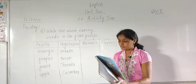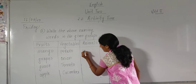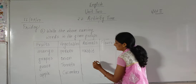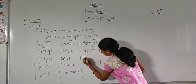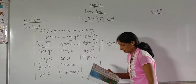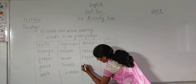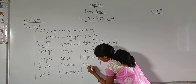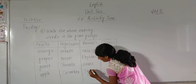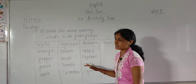Next column is of animals. There are four animals: first one is rabbit — R-A-double B-I-T — elephant, you can see it in your book, snake, and tiger. So there are four fruits, four vegetables, and four animals.